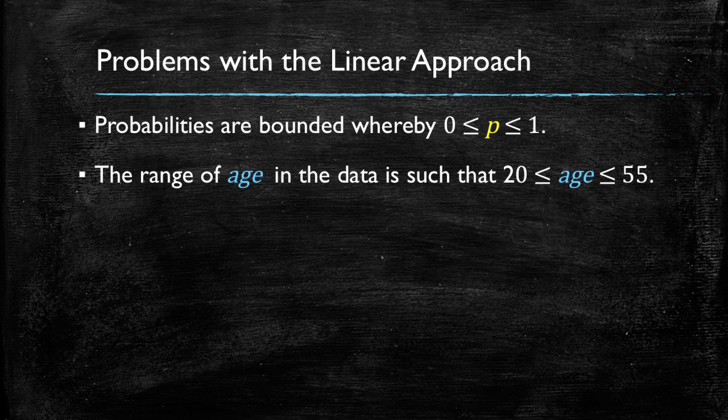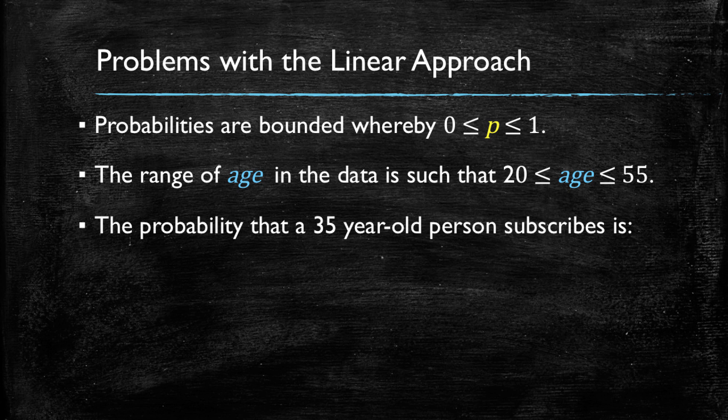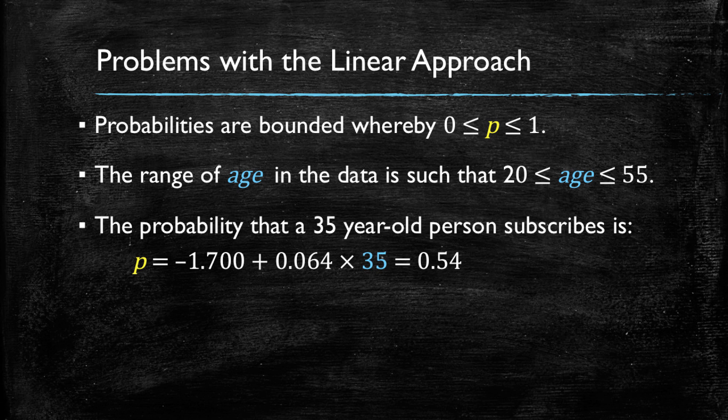That is, the youngest customer in the dataset has 20 years old and the oldest one has 55. Since it only makes sense to develop forecasts for observations similar to the ones we have in our data, then we can assume that computing the estimated probability of a 35-year-old person subscribing is very easy. What we must do is simply plug in the 35 and we find that the estimated probability of a 35-year-old person subscribing is 0.54. So far, so good.